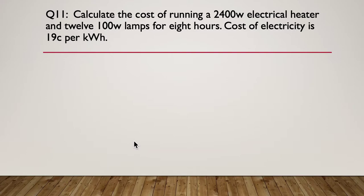Question 11. Calculate the cost of running a 2400 watt or a 2.4 kilowatt electrical heater and 1200 watt lamps for 8 hours. The cost of electricity is 19 cents per kilowatt hour. Pause here. Here's your hint. Calculate the total power first. You've got to know what the total all up power is first. Pause again. Do your calcs.